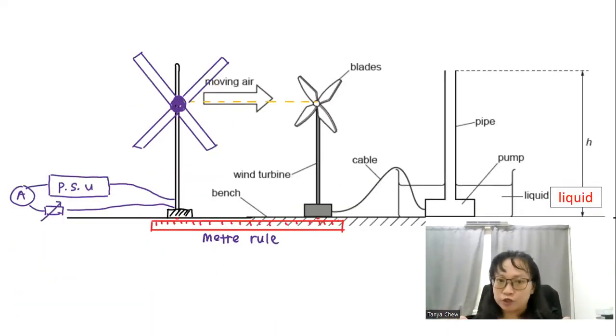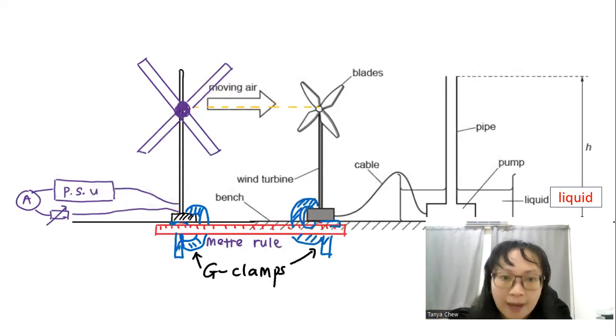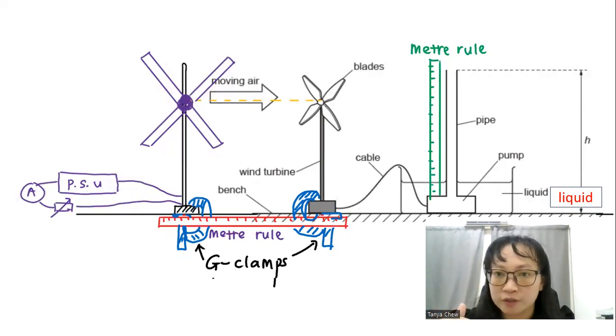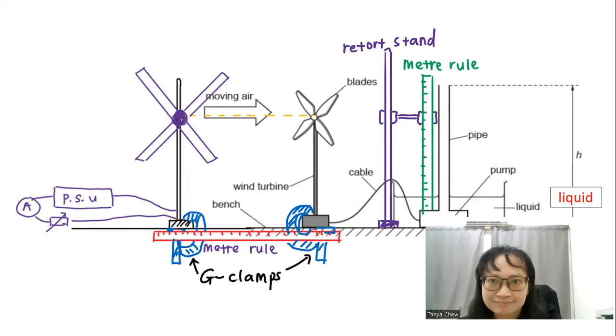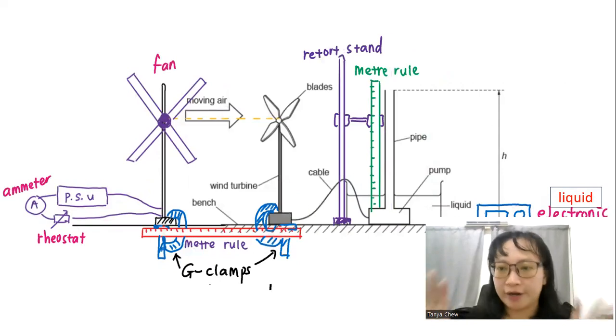So after that, I want to make sure that the distance between the fan and the wind turbine is constant. So I place a meter rule just to make sure that the distance is always constant throughout the whole experiment. And sometimes when you're talking about the wind turbine, the fan that is moving, it could go wobbly sometimes and it could topple. So I need a G clamp to clamp it firm to the bench so that it is not moving. And I can make sure that my distance between the wind turbine and the fan is always constant throughout the whole experiment. And to measure the H, make sure that the H is always constant. I need a meter rule. Could you see my meter rule over there? But my meter rule cannot stand by itself. So I need a retort stand to clamp it.